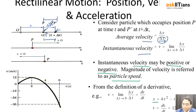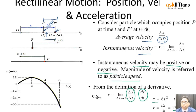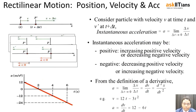If we defined the displacement of the particle as 6t squared minus t cubed, then the instantaneous velocity is dx/dt. Under the limit delta t equals 0, you get dx/dt. Differentiating, you get 12t from the first term and minus 3t squared from the second term — from the definition of the derivative.